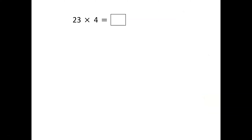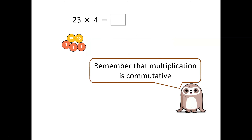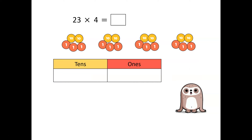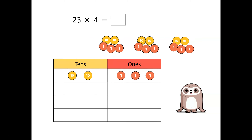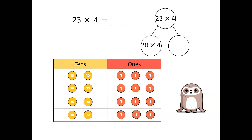Let's have a look at another example: twenty-three multiplied by four. There are four lots of twenty-three. Let's take a look at what this looks like on a place value grid. Again, twenty-three is partitioned into tens and ones. We can represent this on the part-whole model. Twenty-three multiplied by four is broken into twenty multiplied by four and three multiplied by four.